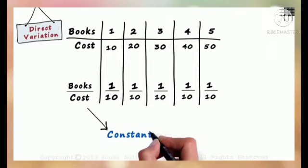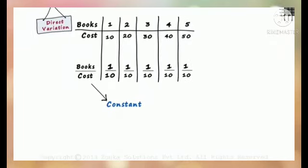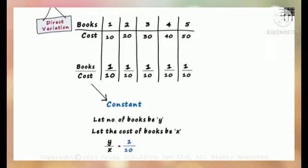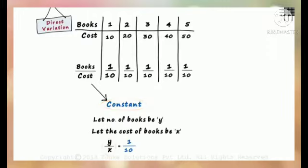This is direct variation. Let's understand it in terms of variables. Let the number of books be y and let the cost of books be x. This ratio will then be y/x, and we can write y/x = 1/10, which is a constant. Now you know where the constant comes from — many students study direct variation as y/x = constant but have no idea what the constant is. If we multiply both sides by x, we get y = (1/10)x.